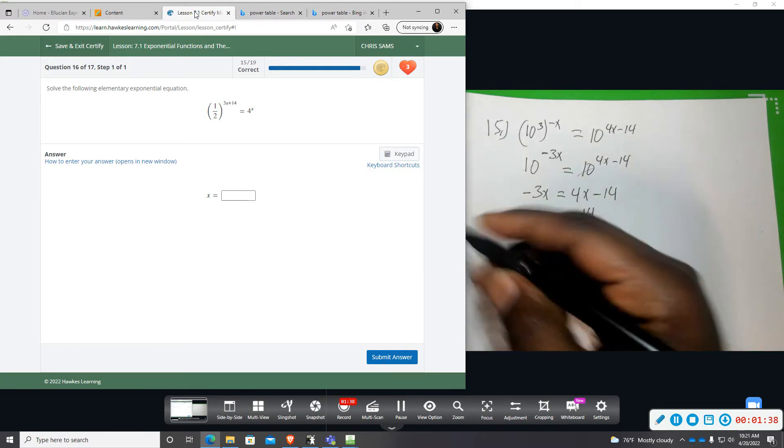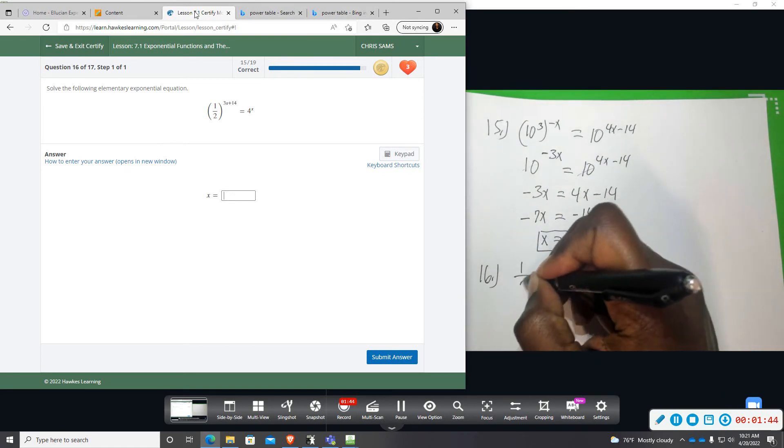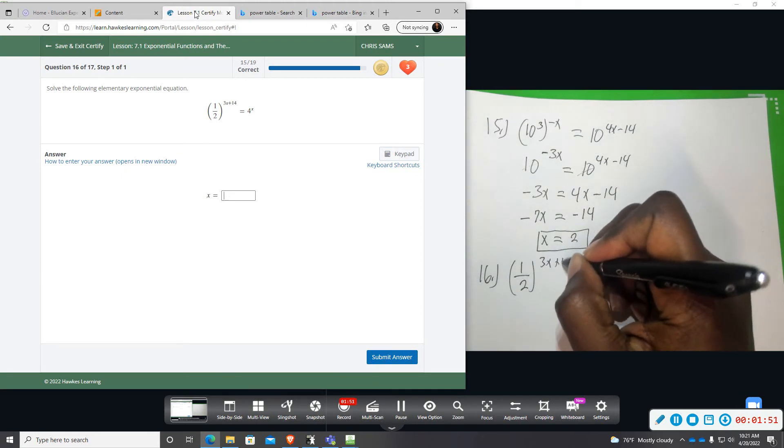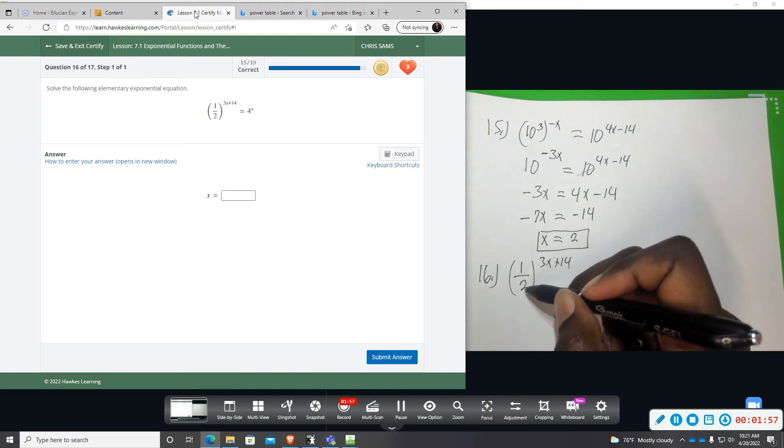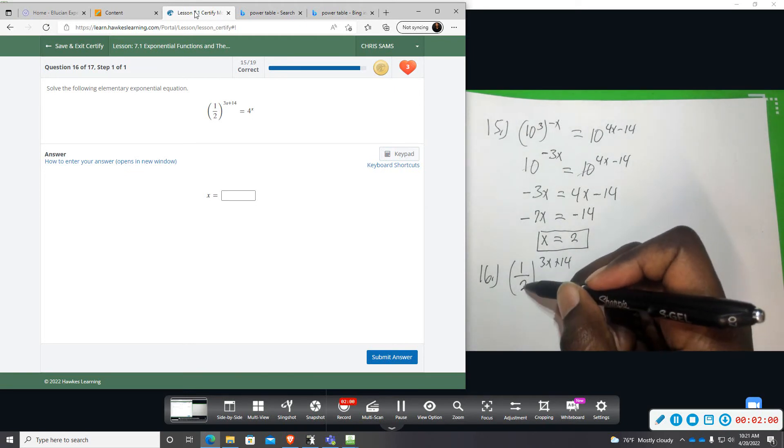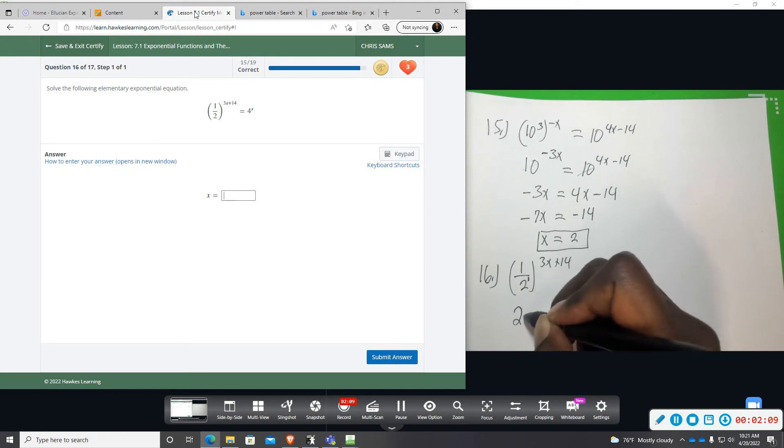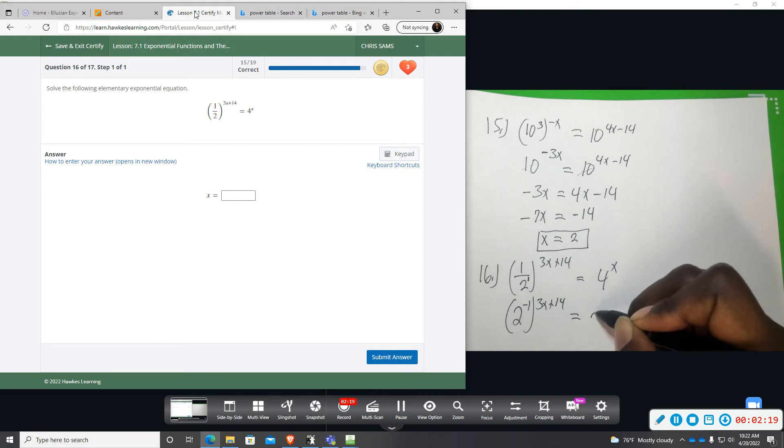Number 16. We have 1 half raised to the 3x plus 14 power, and then we have 4 to the x. So again this fraction I'm going to write it as a whole number. So this is actually 2 to the 1st power when I move this up, it changes sign. So this is going to be 2 to the negative 1 power and then I still have my 3x plus 14.